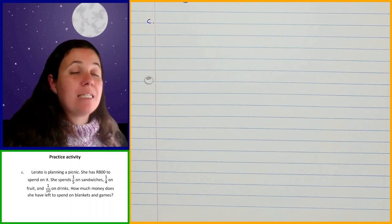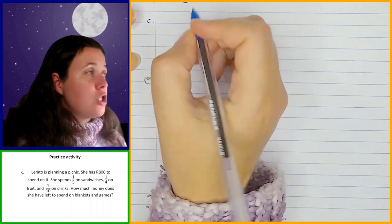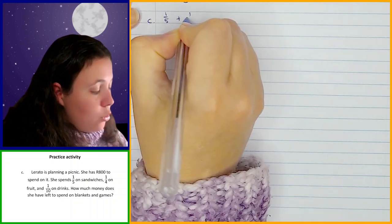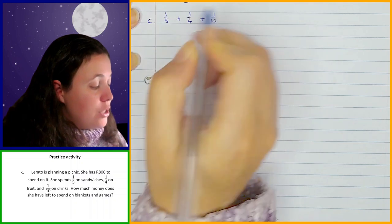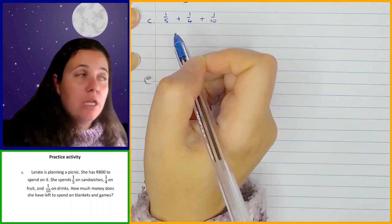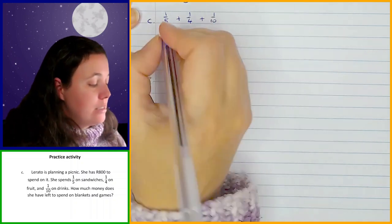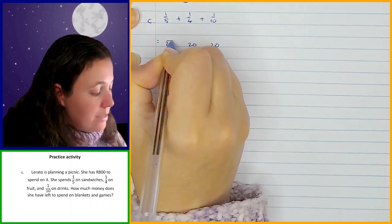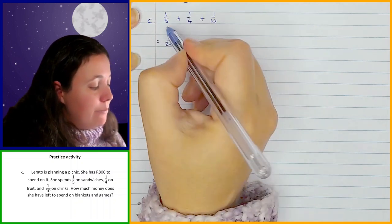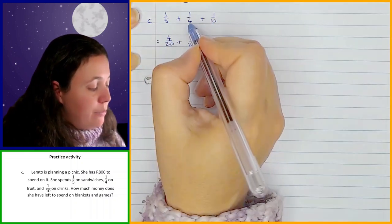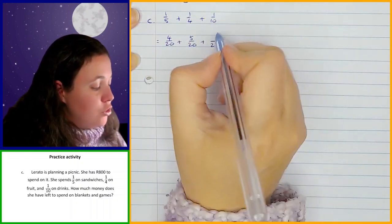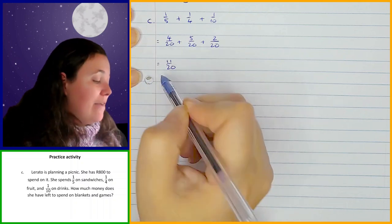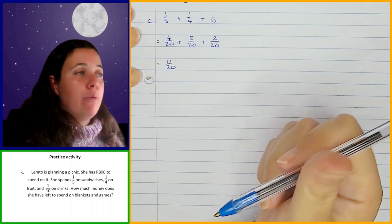There's more than one way of doing this question. I'm going to add up the different fractions: a fifth plus a quarter plus a tenth, to get the total fraction spent on sandwiches, fruit, and drinks. Finding the LCD of 20: that's 4 over 20 plus 5 over 20 plus 2 over 20, which gives me 11 over 20. So she's already spent 11 twentieths of the money on sandwiches, fruit, and drinks.